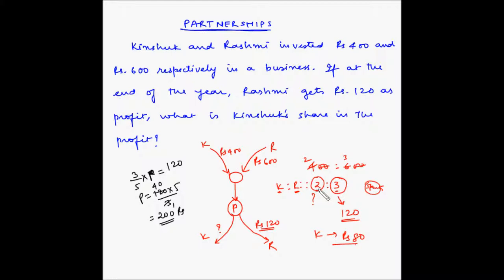Now Kinshuk's share is 2 out of 5 parts of 200. So, 1 by 5, that is we will split this into 5 equal parts, multiplied by 200 and we want 2 parts out of these, so multiplied by 2. So this becomes 5 4s are 20 and one more 0, 4 2s are 8, 80 rupees.